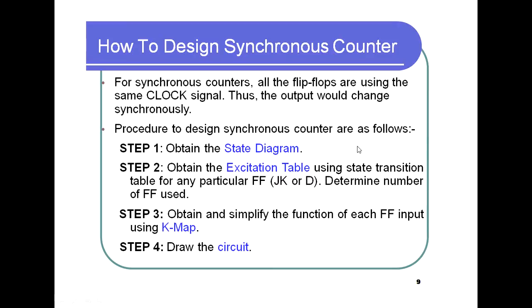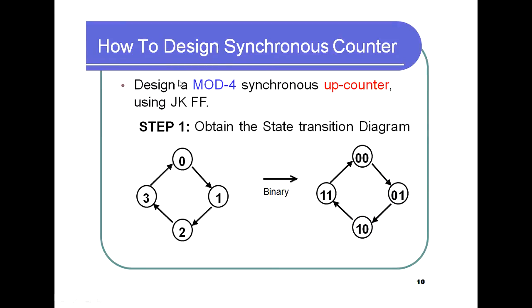Example: design a mod-4 synchronous up counter using JK flip-flops. Obtain the state transition diagram: states 0, 1, 2, 3 are converted to binary — 00, 01, 10, 11. This is how the state transition diagram is achieved.